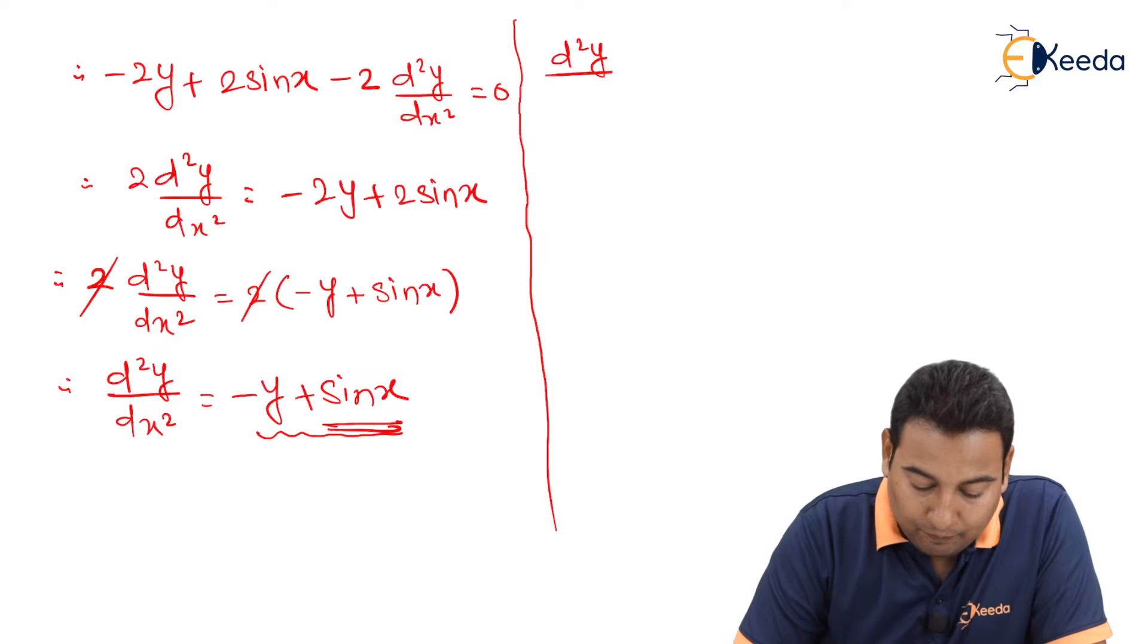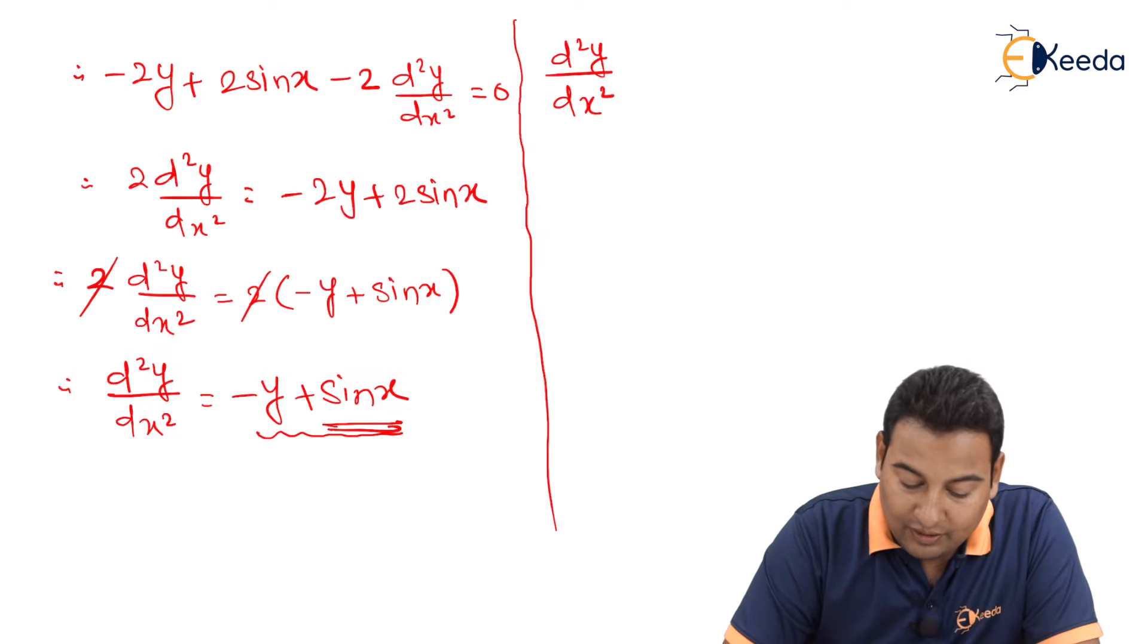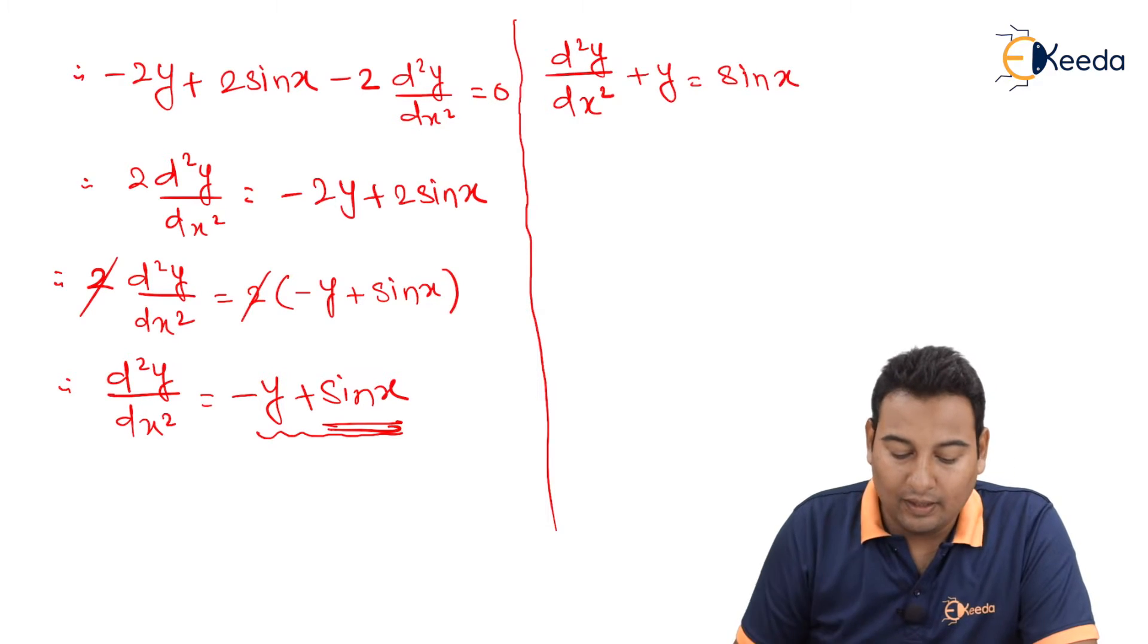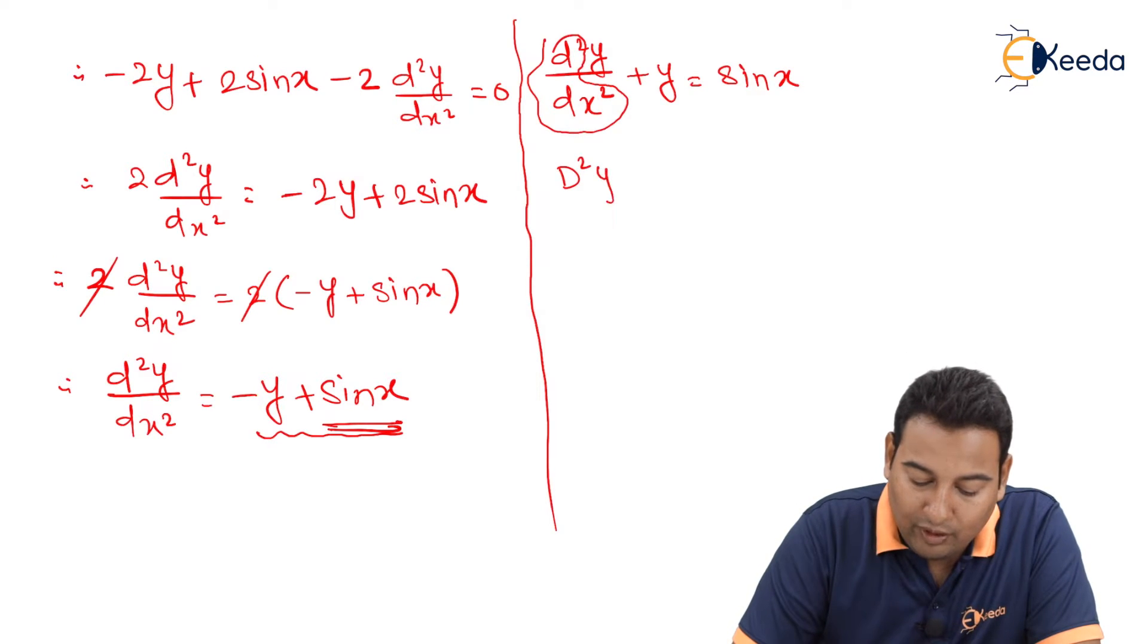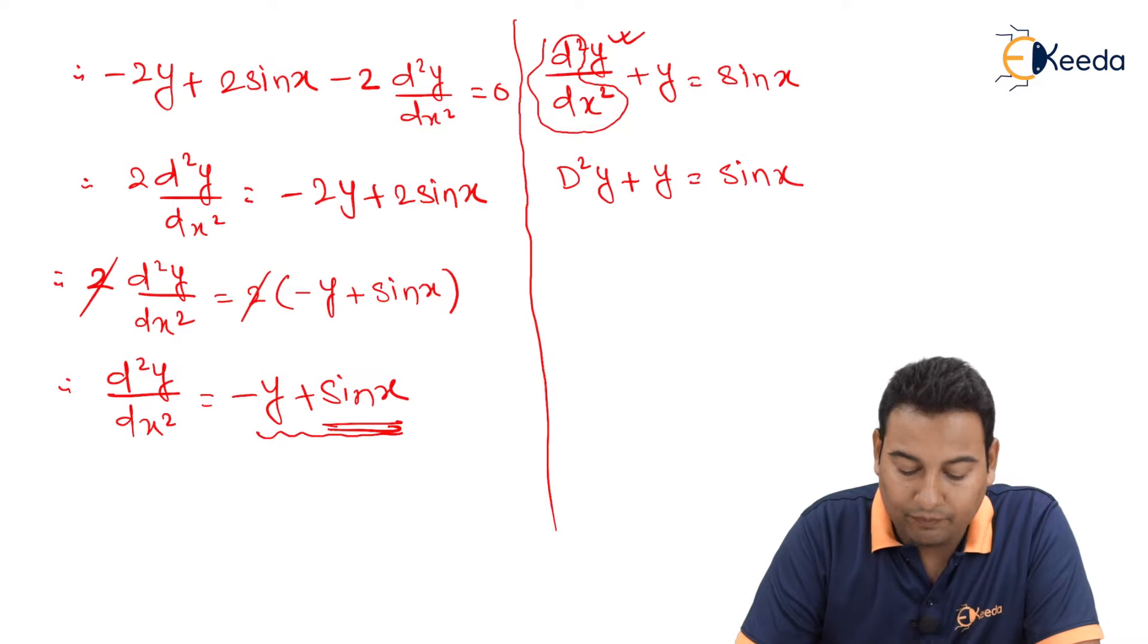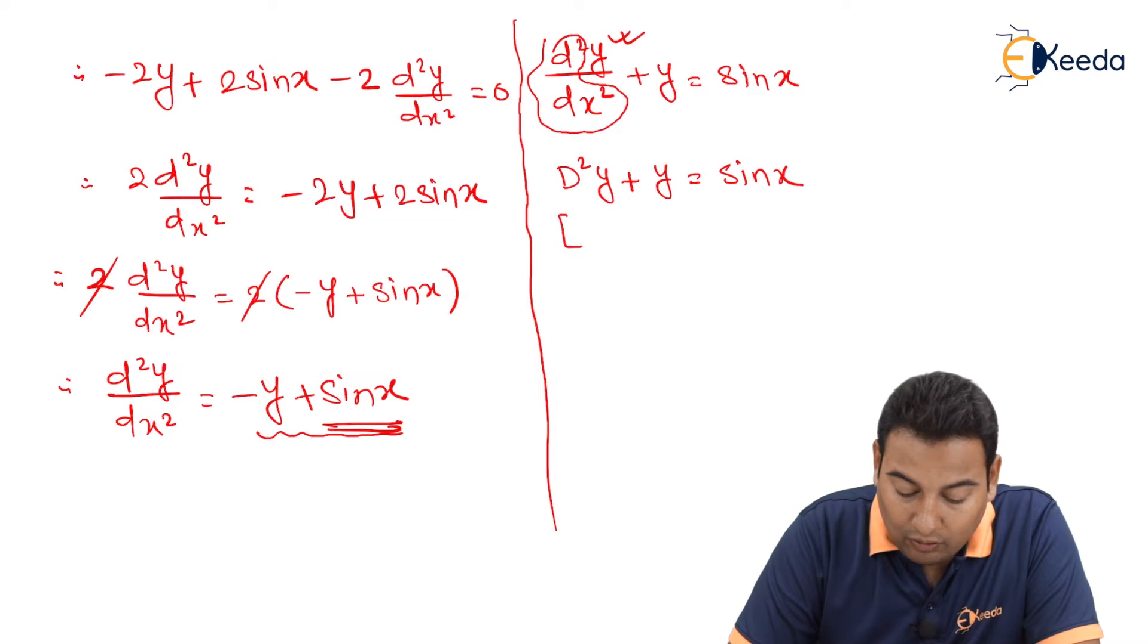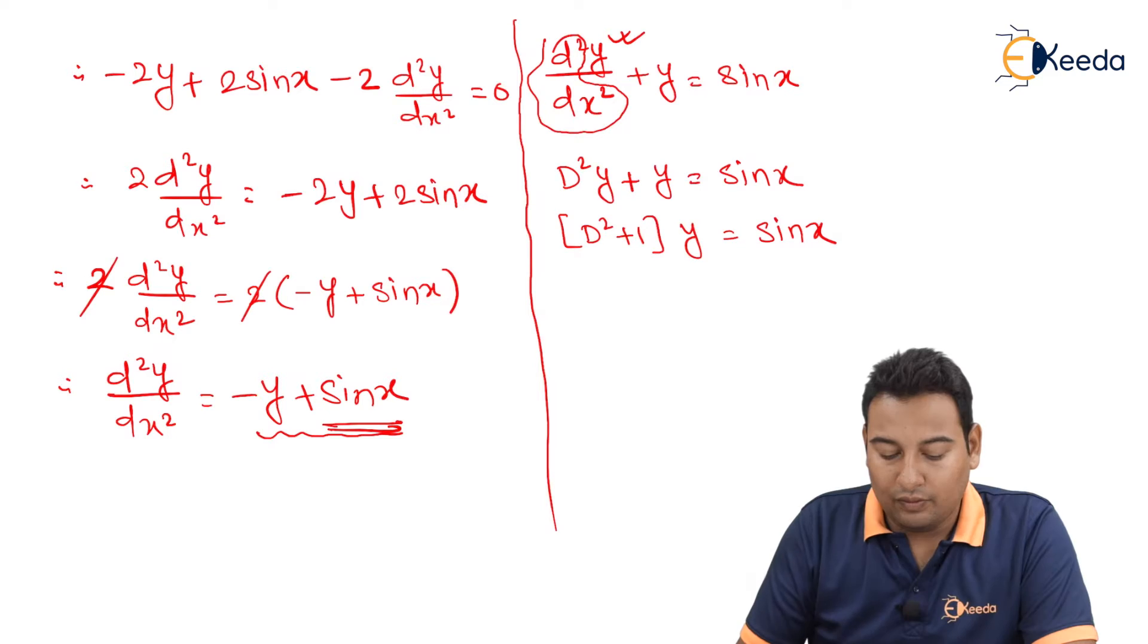For that purpose, let me repeat the process. Minus y will come this side and will become plus y equal to sin x. As discussed, this particular term will become capital D² y. Y is this. Plus y equal to sin x. Let's take y common. This is the equation.